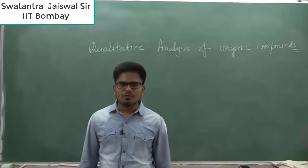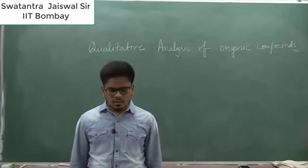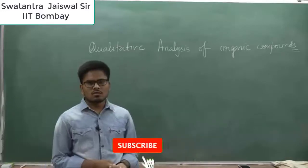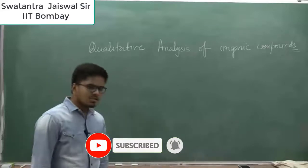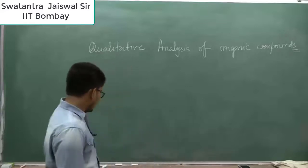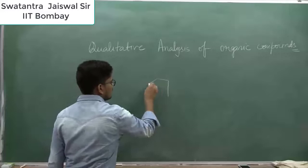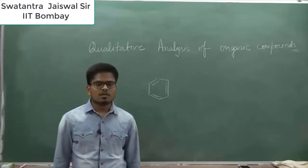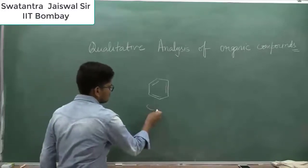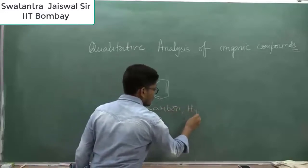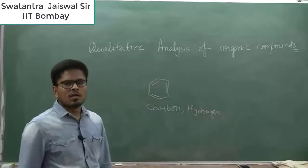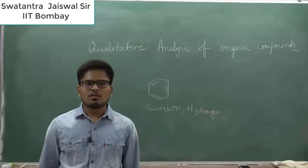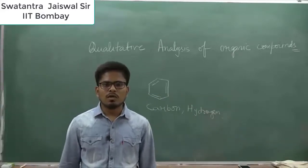Hello students, hope you are all doing well and staying healthy. This is your chemistry lecturer Swatantra Kumar Jaswal, and today I'm going to discuss qualitative analysis of organic compounds. An organic compound like benzene contains elements such as carbon and hydrogen, while different compounds can also contain nitrogen, sulfur, phosphorus, and halogens like chlorine, bromine, and iodine.